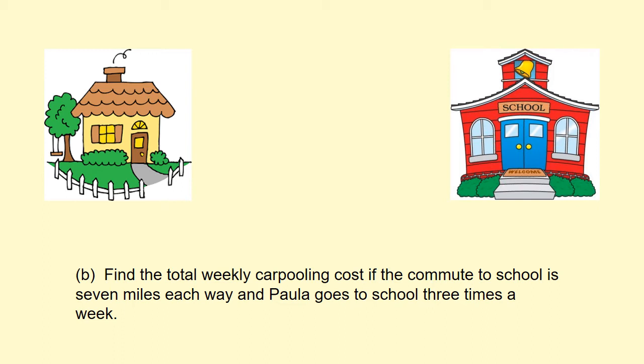Part B tells us to use a formula. If we were able to simplify the formula, that's going to make parts B and C a lot easier. What they tell us is that Paula drives seven miles — her commute with her friend is seven miles each way, meaning her home to school is seven miles.